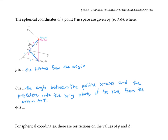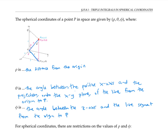Now phi is a different angle — it's the angle between the positive z-axis and the line segment from the origin to P. For spherical coordinates, there are restrictions on the possible values of rho and phi. Rho is required to be greater than or equal to zero, and phi is required to be between zero and pi. The coordinate theta can still take on any value, which is a little different from polar and cylindrical coordinates where both r and theta can take on any value.